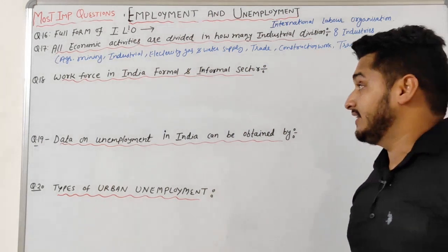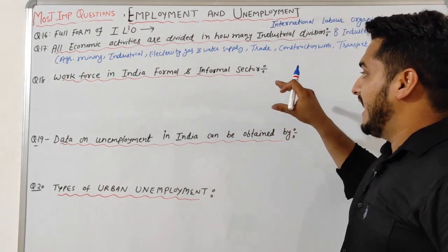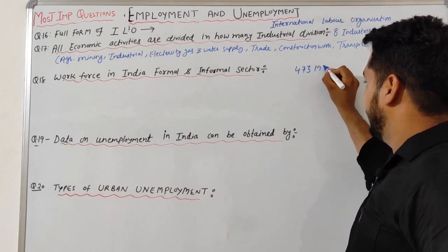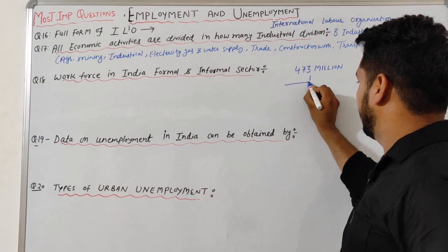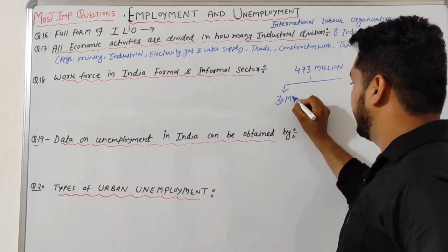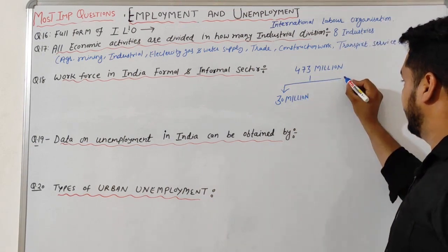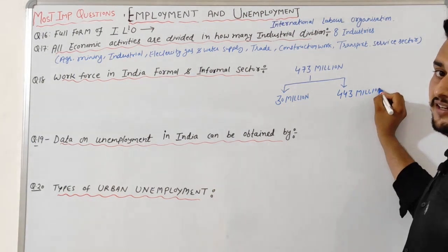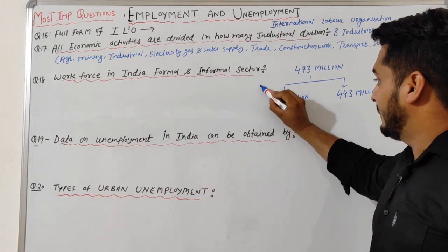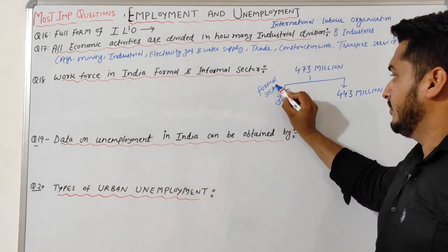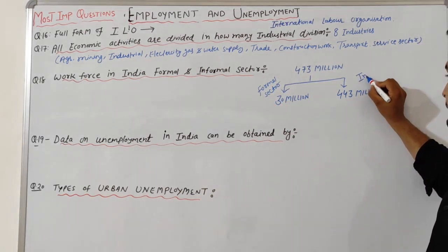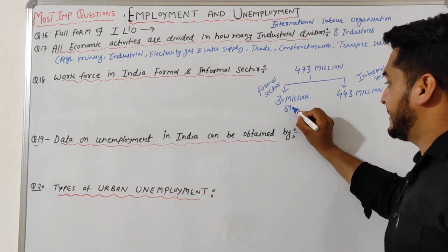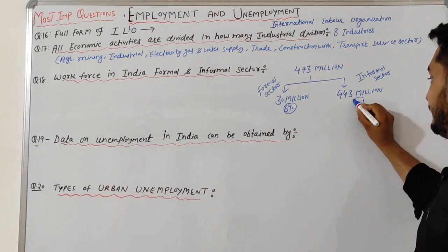Question 18: Workforce in India — formal and informal sector. The total workforce is 473 million. Of this, 30 million are in the formal sector and 443 million are in the informal sector. The formal sector accounts for only 6% and the informal sector for 94%.